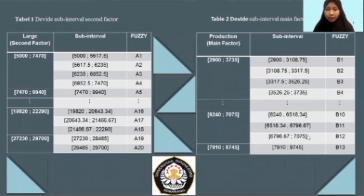And that's the table. Table number one is the result of divided subintervals from the second factor, and table number two is the result of divided subintervals from the main factor.